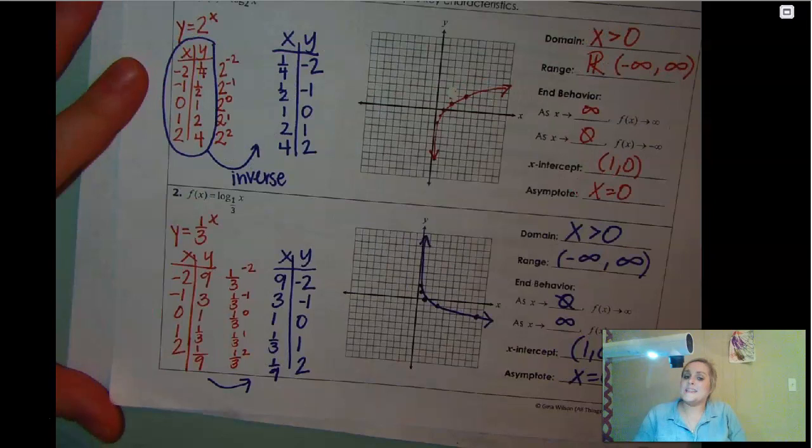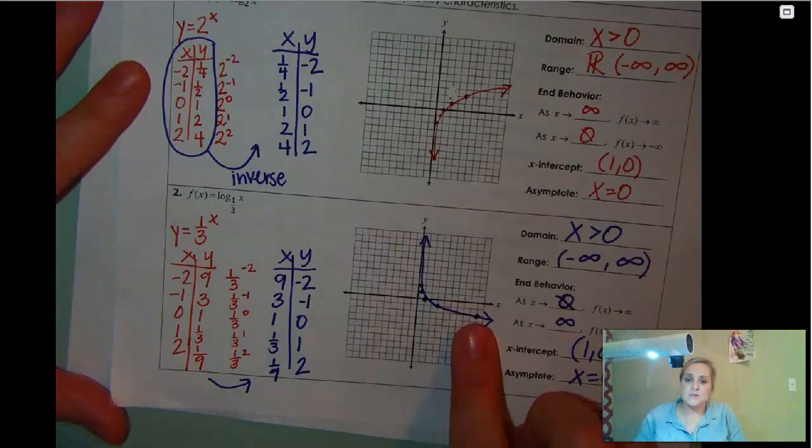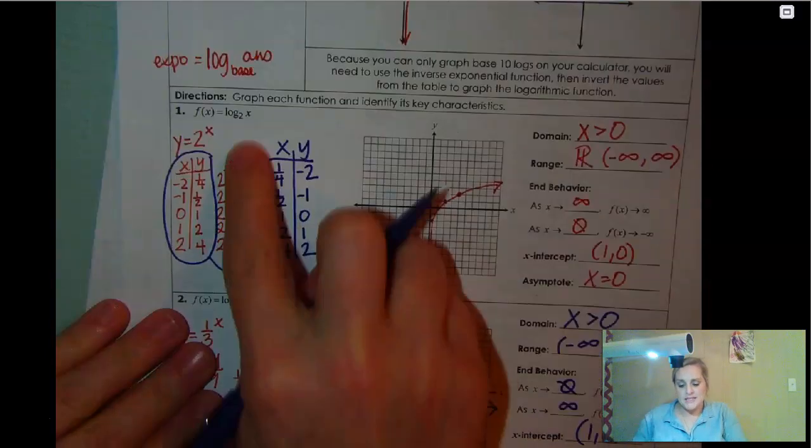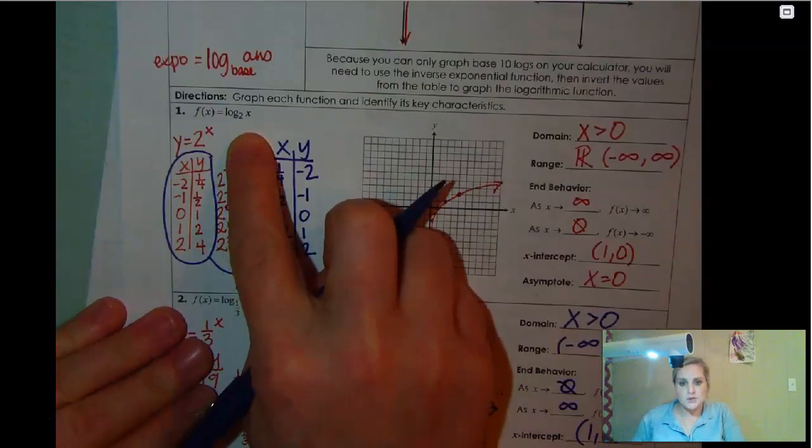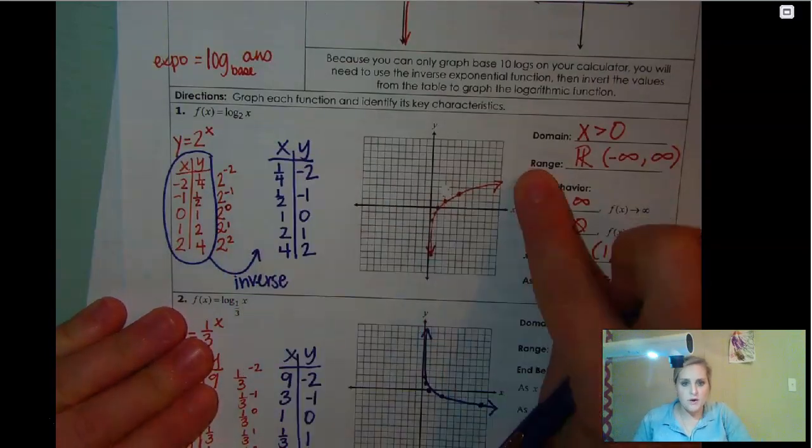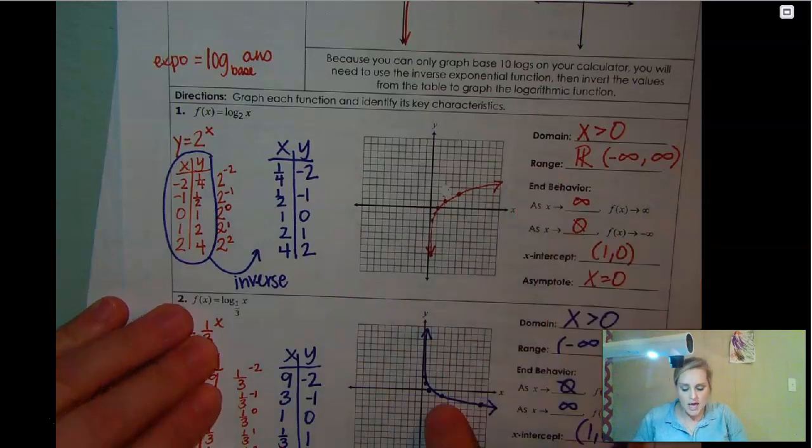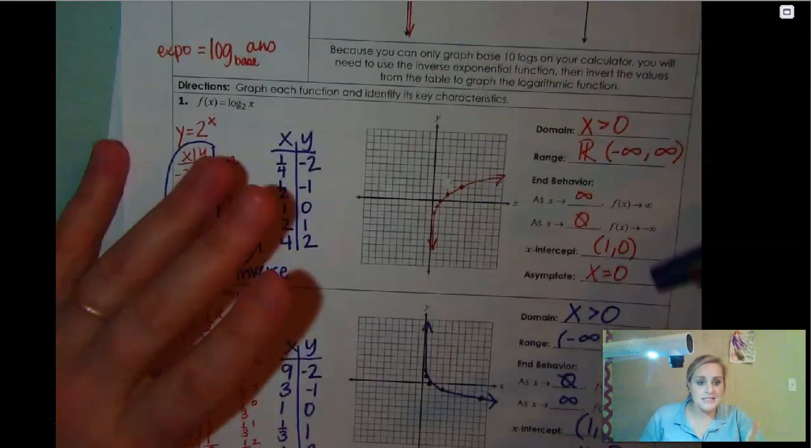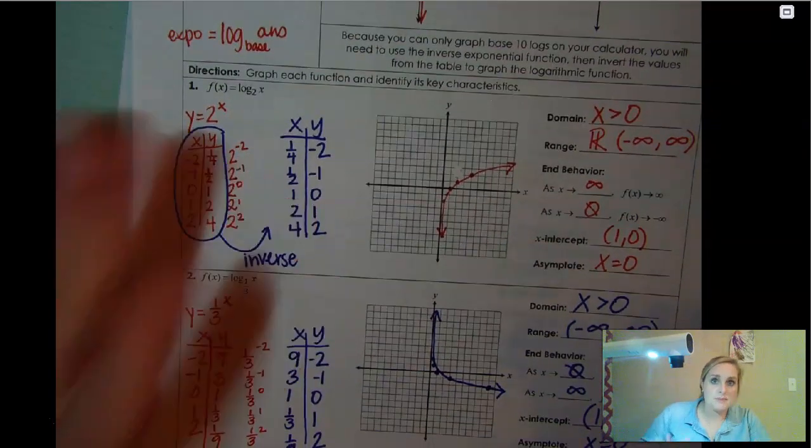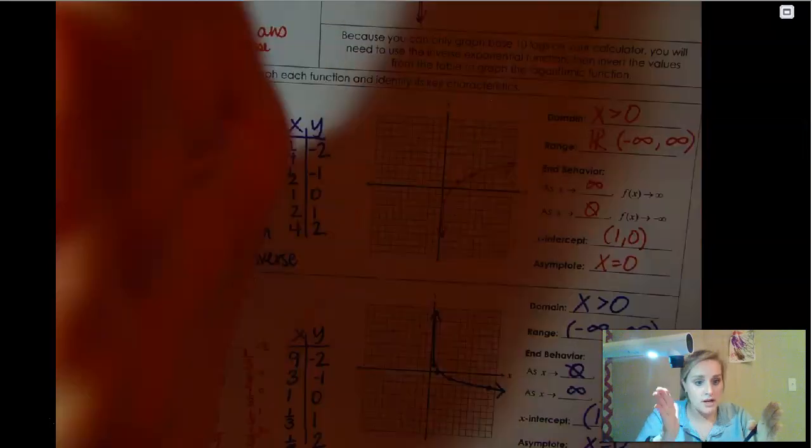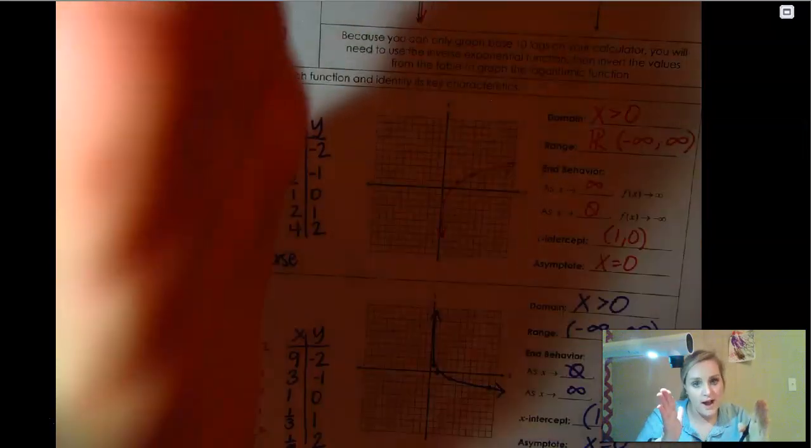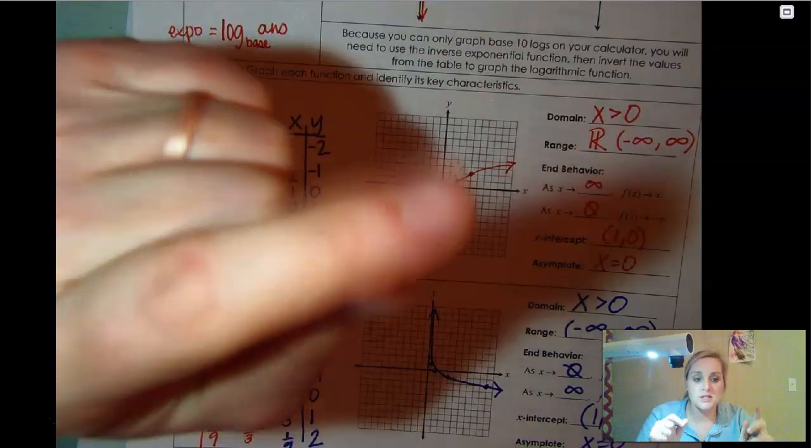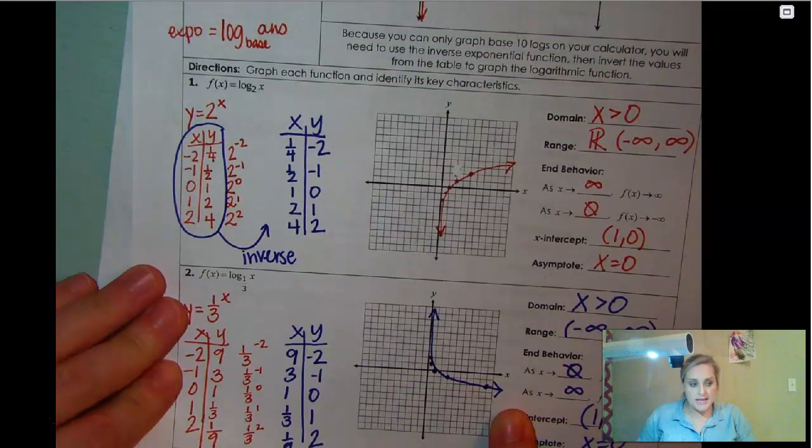So why did this one have decay? Why is this one decreasing? Well, because our base was one third instead of the base being two. If your base is greater than one, you have growth, just like with an exponential. If it is less than one, it is going to be decayed. Less than one means it's less than one but greater than zero. So you're dealing with a fraction right there. If you've got your fraction, that's what's going to give you your decay.